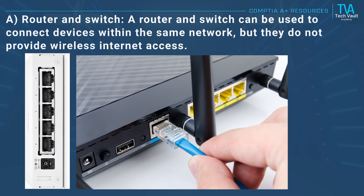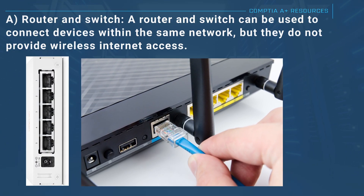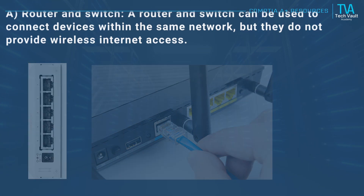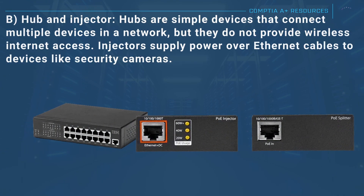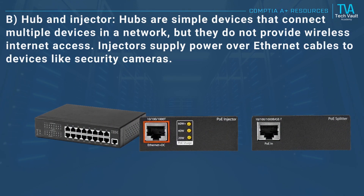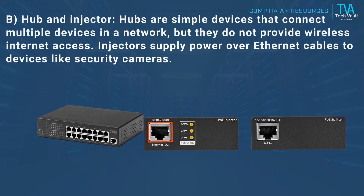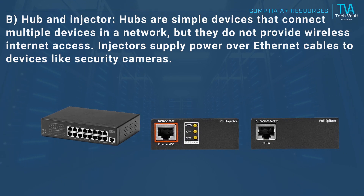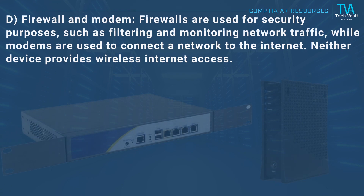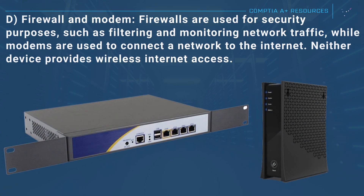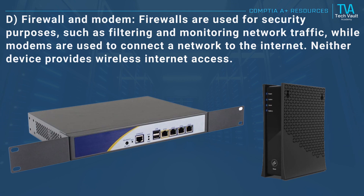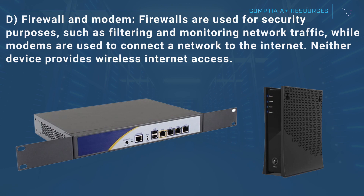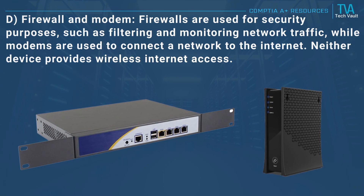A, router and switch: a router and switch can be used to connect devices within the same network but do not provide wireless internet access. B, hub and injector: hubs connect multiple devices in a network but do not provide wireless internet access; injectors supply power over Ethernet cables to devices like security cameras. D, firewall and modem: firewalls are used for security purposes, while modems connect a network to the internet; neither device provides wireless internet access.